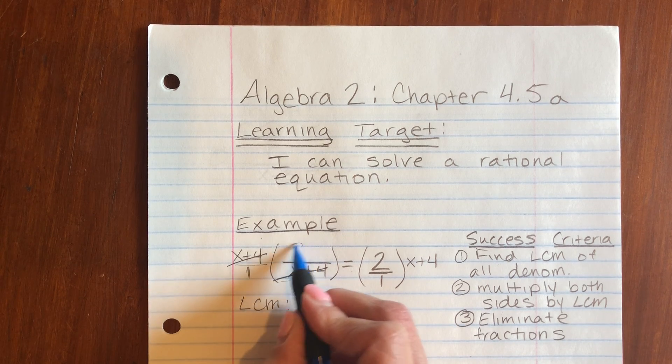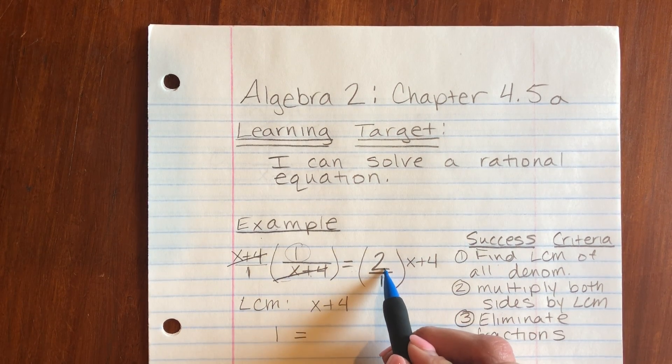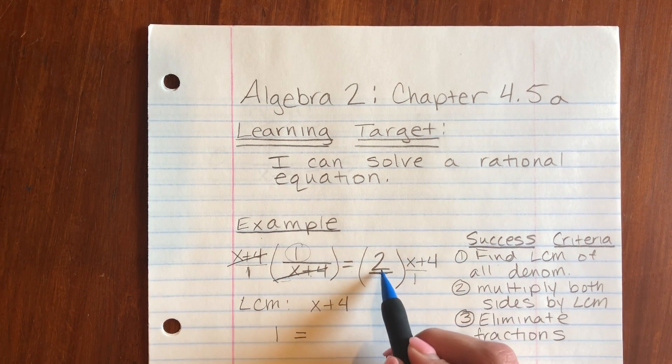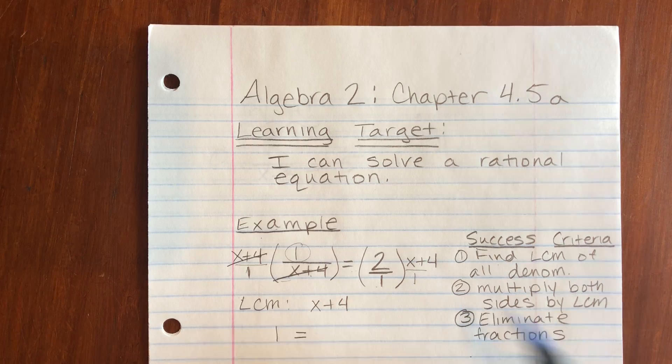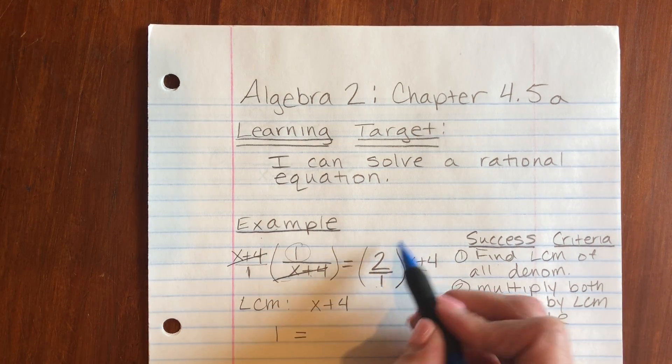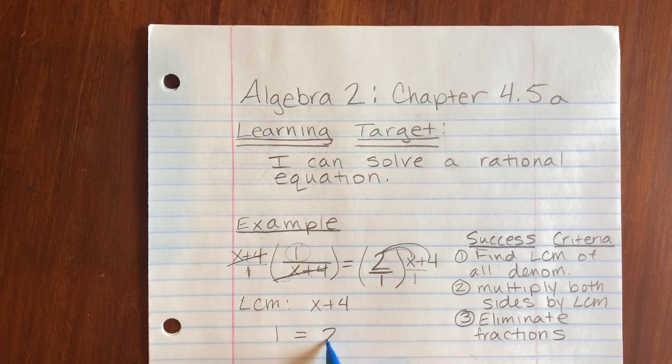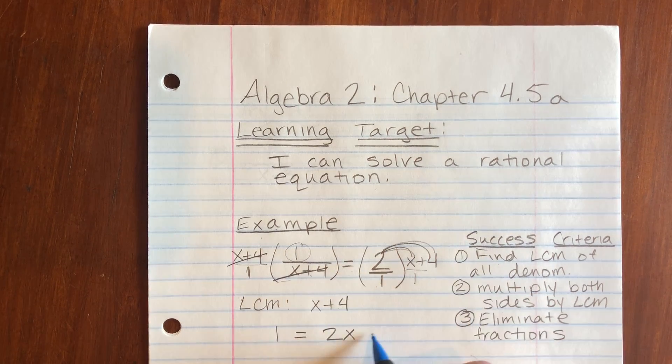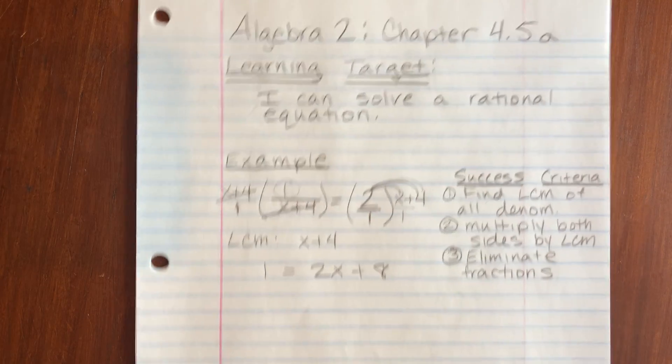And you're just left with 1 here. So 1 equals... let's look at this side. Those don't cancel out, but anything over 1 is itself. So what I need to do is multiply this 2. 2 times x is 2x and 2 times 4 is 8. And that 1, we can drop it.